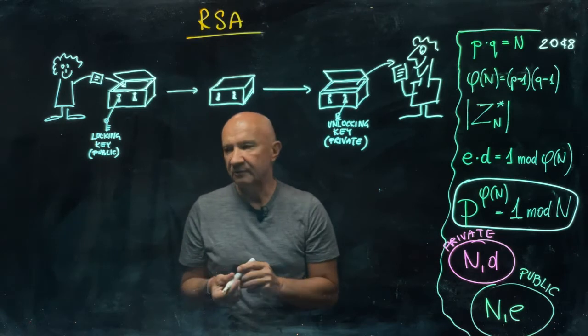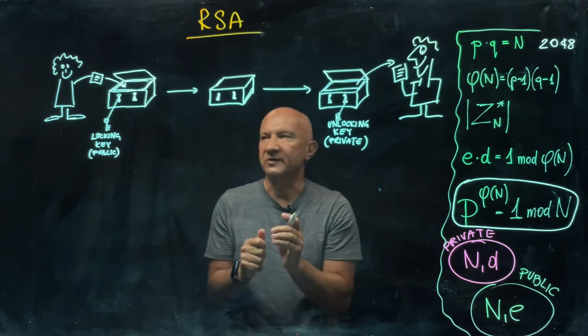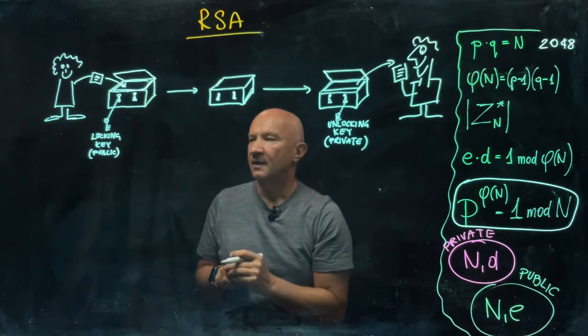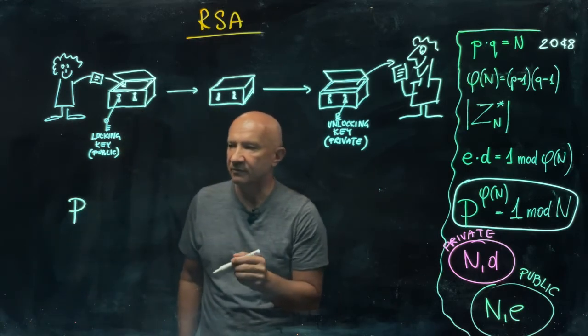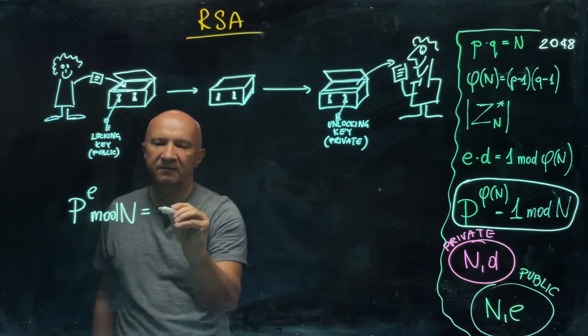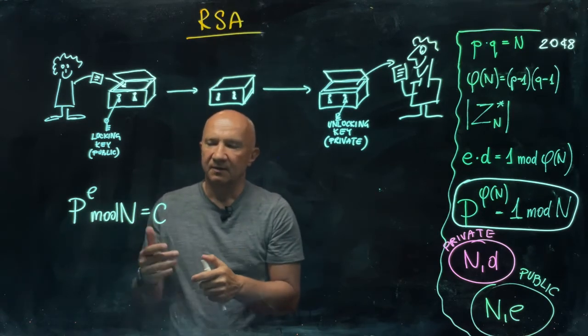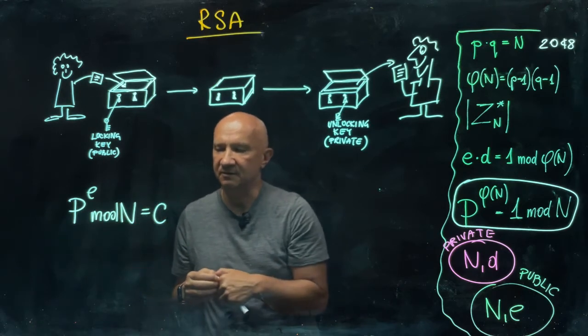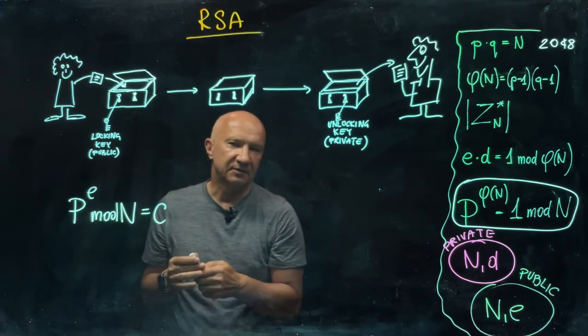Now, the way that encryption works is that Alice is going to divide her message, which can be treated as a sequence of numbers into small chunks, into small blocks, so that each number is less than n. She takes this block, say it's p for plain text, and the encryption method will just work as follows. You raise it to power e mod n, and this is your cryptogram. She will just take p raised to power e mod n. When she does it, if you change the value of p, then this cryptogram will be just all over the place. So, this is very difficult knowing just c and knowing e to figure out what the p is.